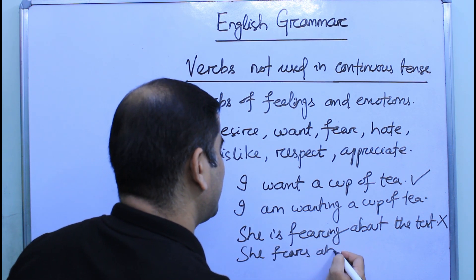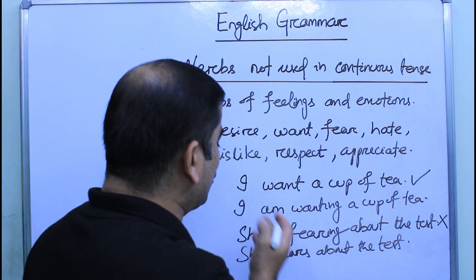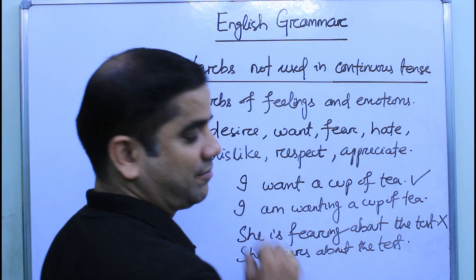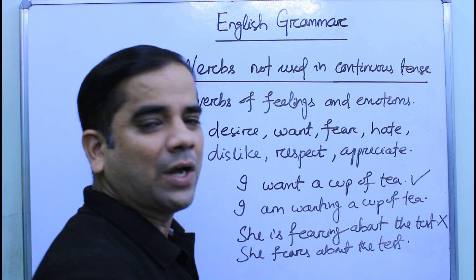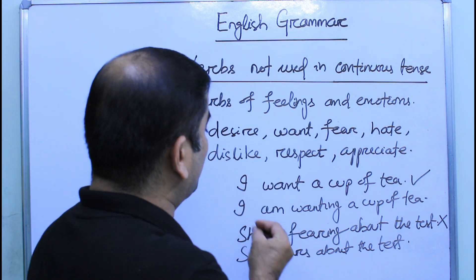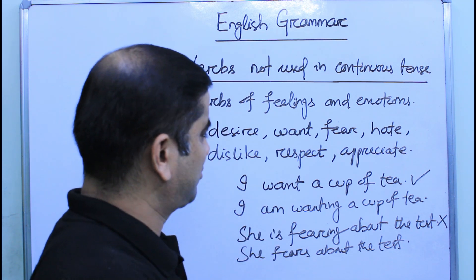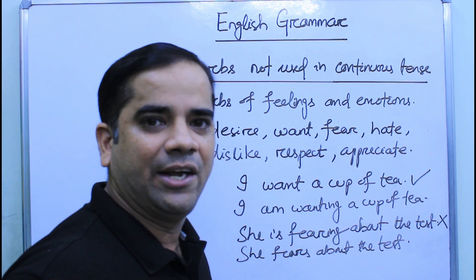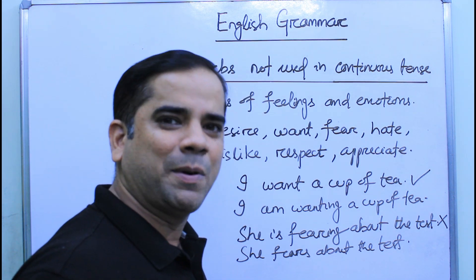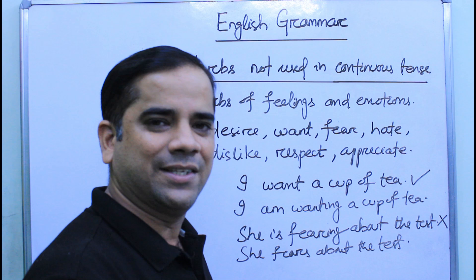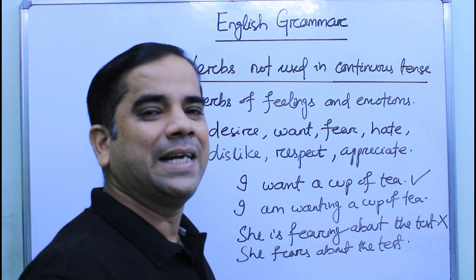We should not write 'I am disliking you' or 'I am respecting my teachers.' Instead, use simple present tense: 'I respect my teacher.' Whenever we use verbs of feelings and emotions, we should not use present continuous tense. We use simple present tense in those cases.